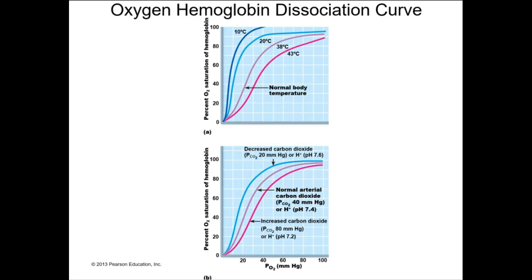If you are hyperventilating, you are off-gassing more carbon dioxide, which means your carbon dioxide level in your blood is low, and you can become alkaline. Alkalosis and acidosis are both medical conditions and are both problematic. Therefore, our nervous system's innervation of our respiratory muscles is partially based on our acid-base balance.